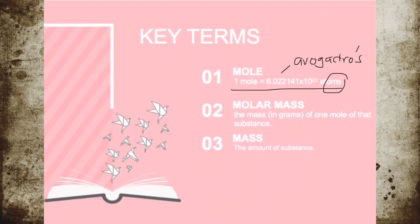So what is a mole? A mole is just a number of things. For example, one dozen is 12 things, one pair is two things. Therefore, one mole will be 6.022 times 10 to the power of 23 atoms.